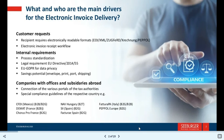If we talk about internal requirements, the first is process standardization — one format generally used across all industries for C-burger processing. Legal requirements include EU Directive 2014/55, EU GDPR for data privacy, and savings potential: eliminating envelope prints and shipping. Companies with offices and subsidiaries abroad need connection to various tax authority portals, with special compliance guidelines per country.